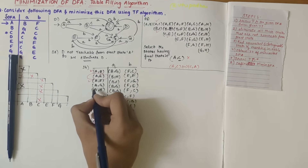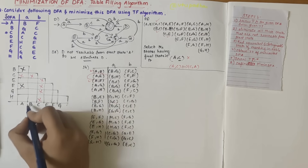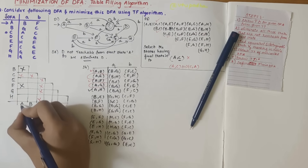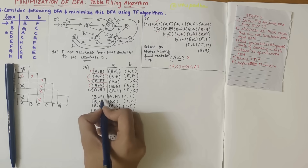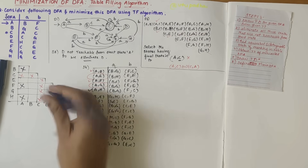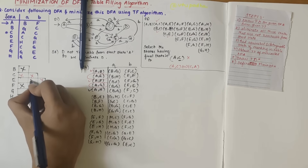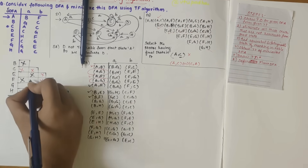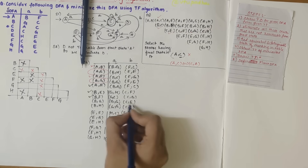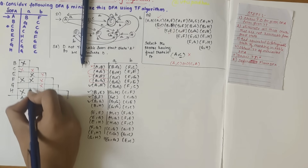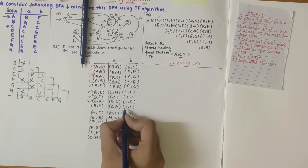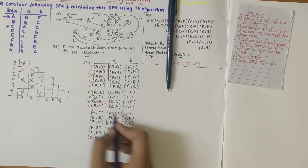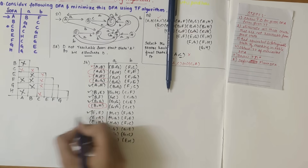For a-h: f-c is marked, so mark a-h. For b-e: c-f is marked, so mark b-e. For b-f: g-c is marked, so mark b-f. For b-g: c-e — c is marked, so mark b-g. For b-h: c-c — c-c does not exist as a pair, so circle it. For e-f: h-c is marked, so mark e-f.